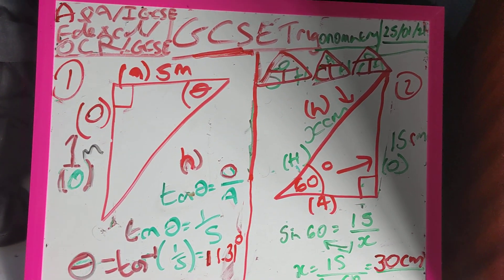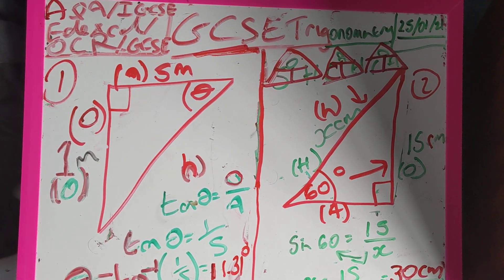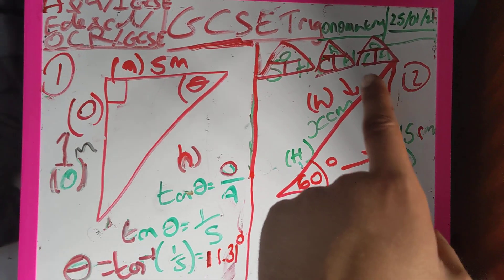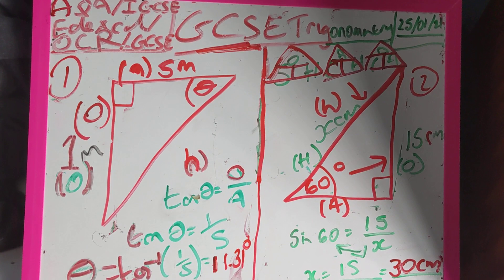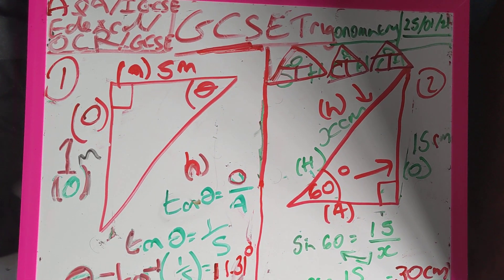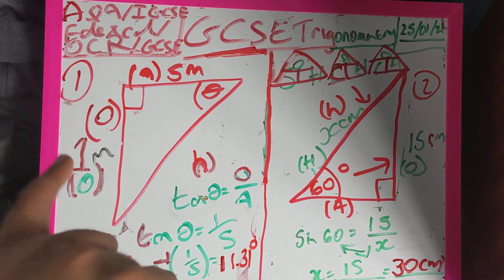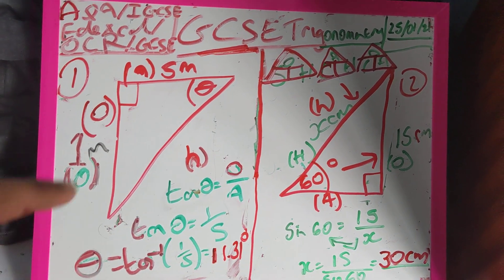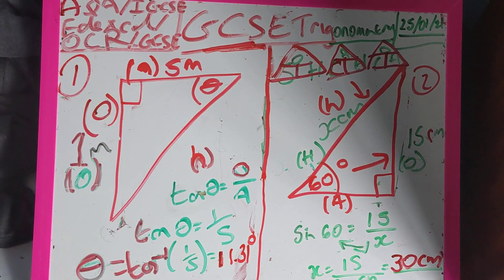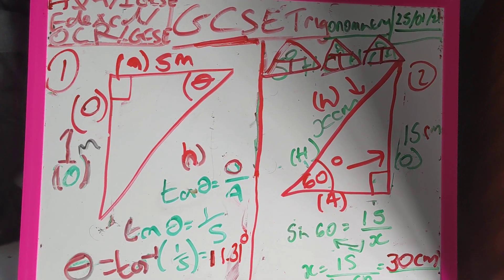We've got an opposite and I've got an adjacent, so looking here guys I'm going to be using tan. So tan of my angle is opposite over the adjacent, so opposite is one, adjacent is five. So tan theta is opposite over adjacent, so tan theta is one over five.